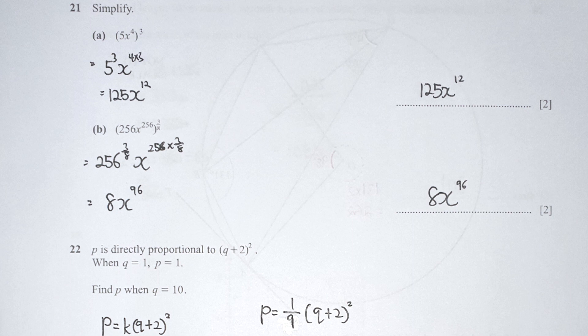Question 21: multiply the power of 3 into 5 and x to the power of 4. You get 5 to the power of 3 times x to the power of 4 times 3, which gives 125x to the power of 12. For part b, 256 — after multiplying by 3 over 8 — gives 8 times x to the power of 96 as the final answer.